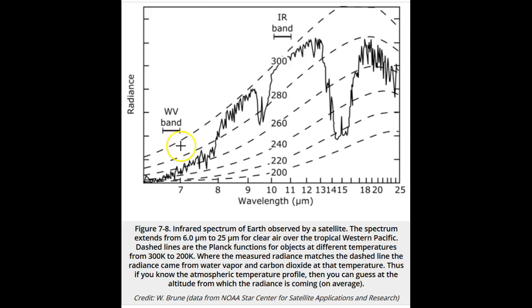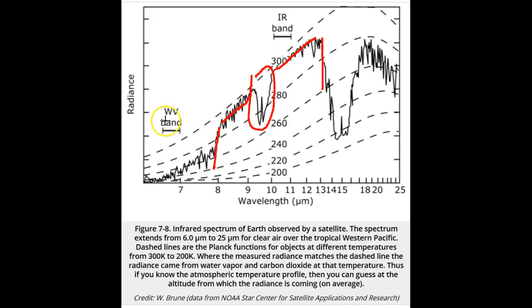Between 8 and 13 microns, no infrared gas absorbs very well in the atmosphere, except for ozone around 9.6 microns. Note that the radiance in this window came from matter at a temperature near 300 Kelvin or 27 degrees C. From the satellite's position, this radiance is known to come from the ocean in the Pacific.